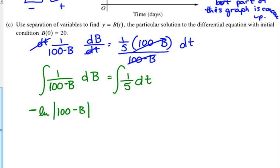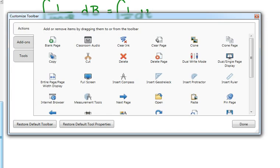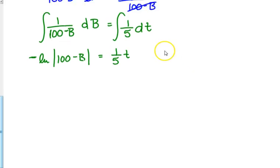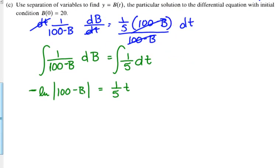The anti-derivative of one over one-hundredth, minus B, with respect to B, is the natural log of the absolute value of one-hundredth, minus B. And there's a negative, because it was negative B. And the anti-derivative of one-fifth, with respect to T, is one-fifth T. And you get one point for that right there.